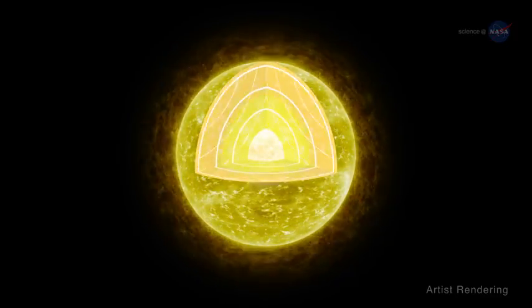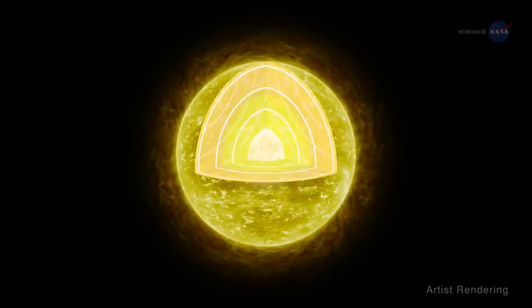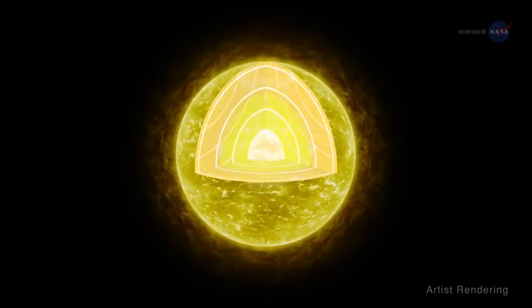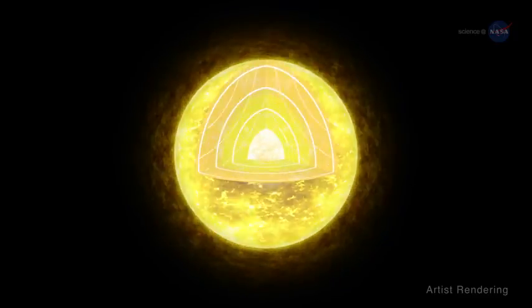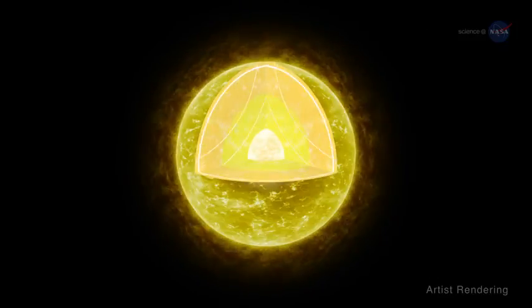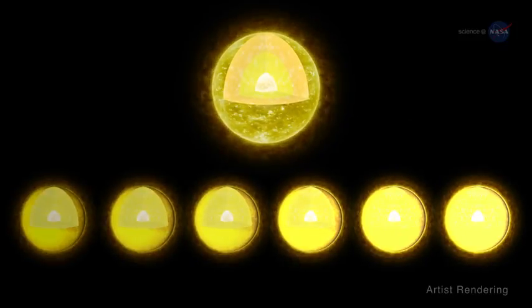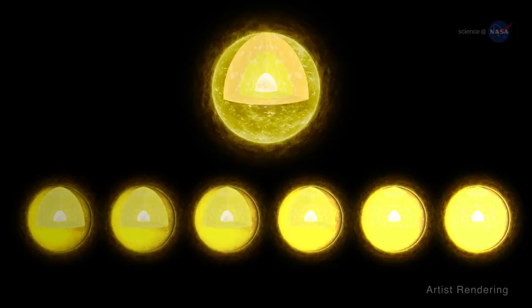Stars are rumbling, noisy spheres of hot gas. Sound waves bounce around the interior and cause the stellar surface to vibrate, much like the head of a drum. These vibrations reveal themselves as fluctuations in a star's brightness.